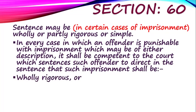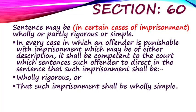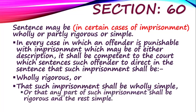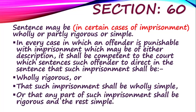The court, understanding the nature of the offence and the circumstances of the offender, will decide what type of imprisonment should be given. It can be wholly rigorous — meaning the prisoner stays in jail and also has to do hard labour. Or the punishment can be wholly simple, or partly simple and partly rigorous. So three types of imprisonment can be given, and this depends on the court's discretionary power. The court alone is competent to decide what type of imprisonment will be given to an offender.